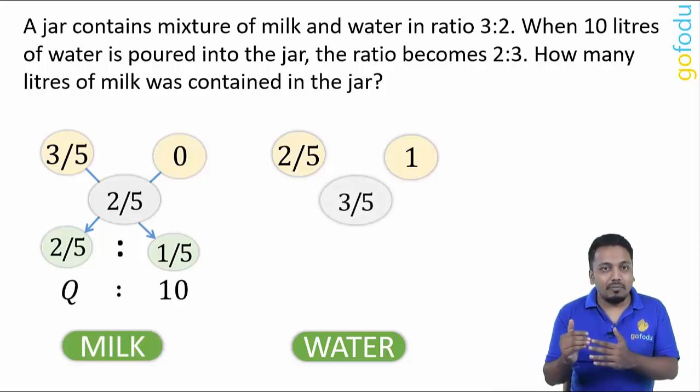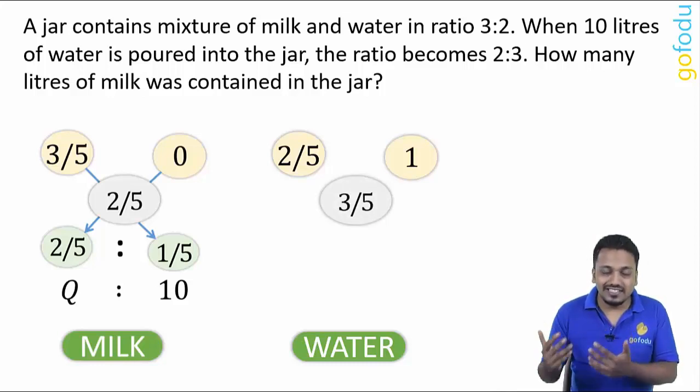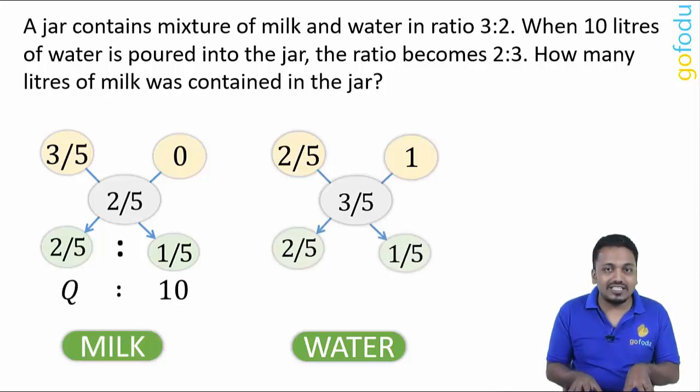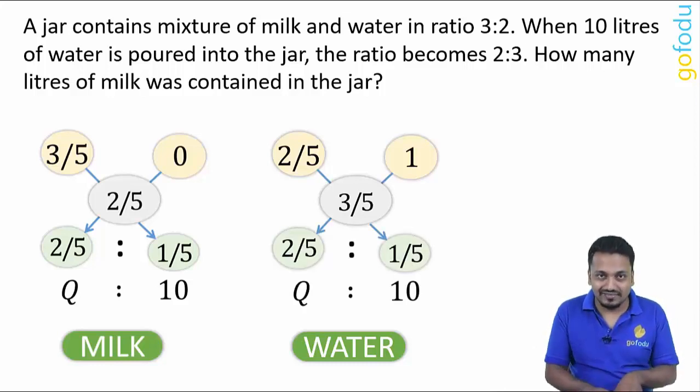C_average will be 3/5 or 60%. Take crosswise difference and equate the ratio to Q:10. This will give the same value of Q as before.